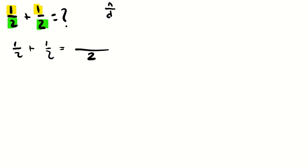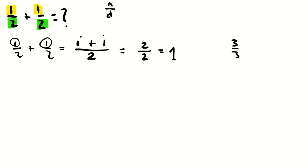Then you add the numerators together. So you're going to have 1 plus 1, and that's going to be equal to 2. Then you carry over the 2, and a number divided by itself is equal to 1 — even if it was 3 over 3, 4 over 4, or 10 over 10, you'd get 1. That's how you add fractions with the same denominator.